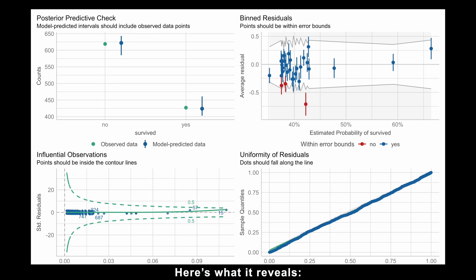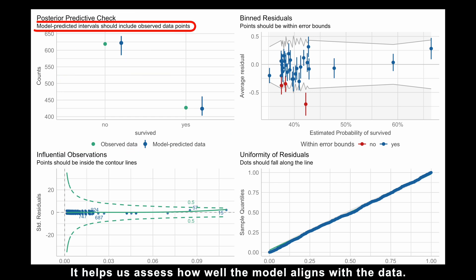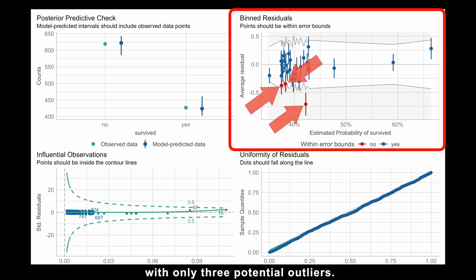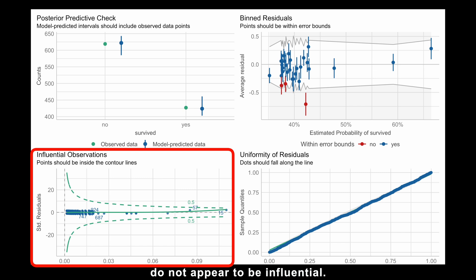Here is what it reveals. The posterior predictive check involves comparing the model's predicted intervals with the actual observed values. It helps us assess how well the model aligns with our data. Most residuals fall within the error bands with only three potential outliers. But the very next plot tells us that these outliers do not appear to be influential.